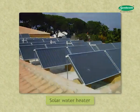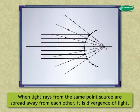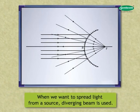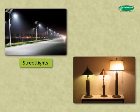When light rays from the same point source are spread away from each other, it is divergence of light. When we want to spread light from a source, diverging beam is used, for example in street lights, table lamps, etc.